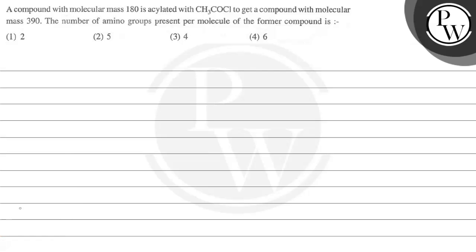Hello, let's read this question. A compound with molecular mass 180 is associated with CH3COCl to get a compound with molecular mass 390. The number of amino groups present per molecule of the former compound is, and we have four options here.